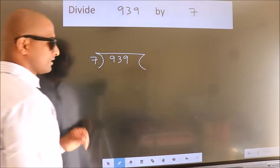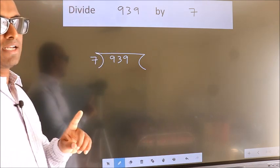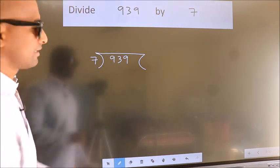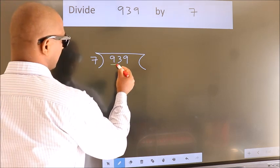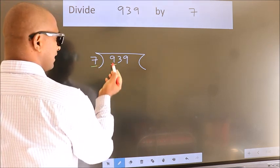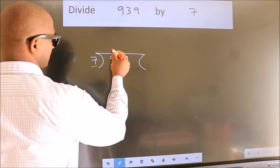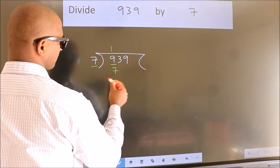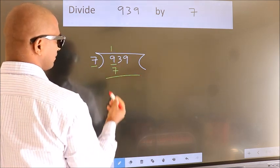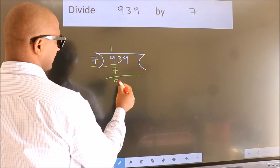This is your step 1. Next, here we have 9, here 7. A number close to 9 in the 7 table is 1 times 7, which is 7. Now we should subtract. We get 2.